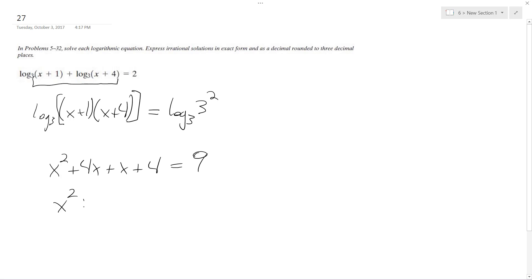So this becomes x squared plus 5x, and I'm going to move the 9 over, so I get minus 5 equals 0. Then plug this in the quadratic formula.